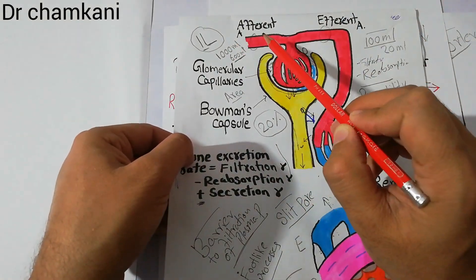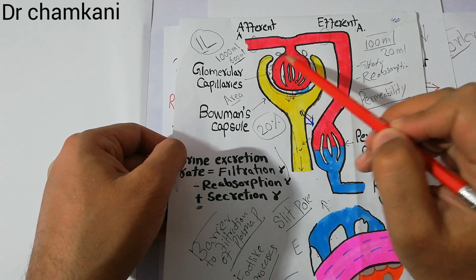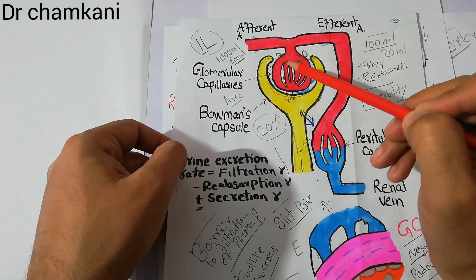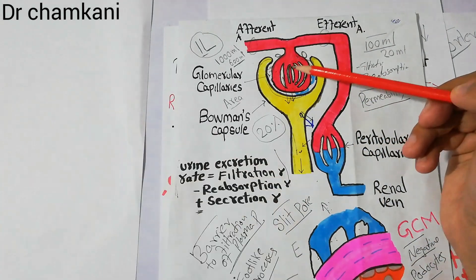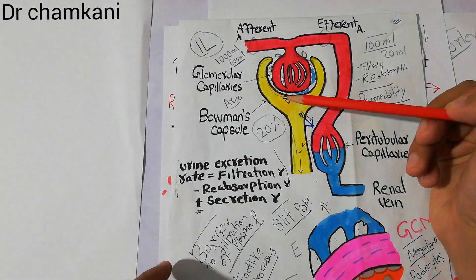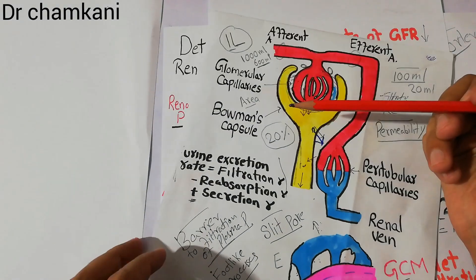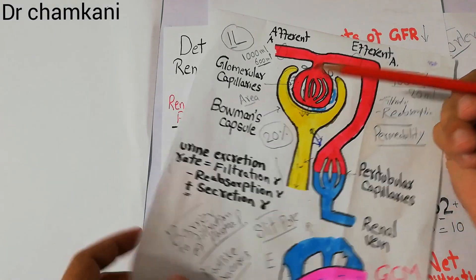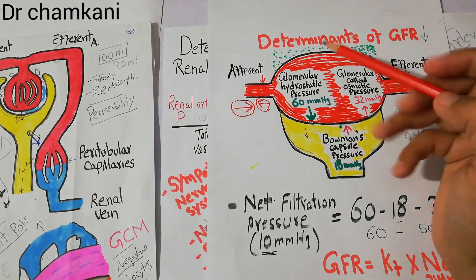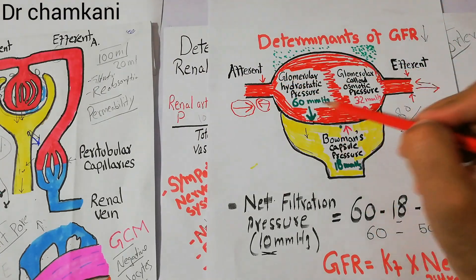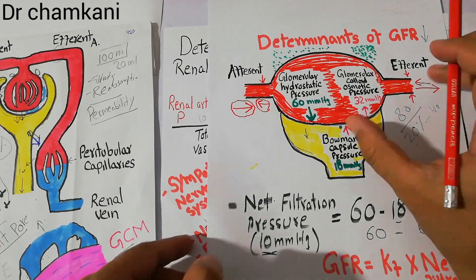Blood comes through the afferent arteriole into the glomerular capillaries and then leaves through the efferent arteriole. In the glomerular capillaries, the filtration process occurs and the filtrate enters Bowman's capsule, and then the process of urine formation starts. This was discussed in detail in a diagram in which the glomerular capillaries were enlarged and the afferent and efferent arterioles were shown.